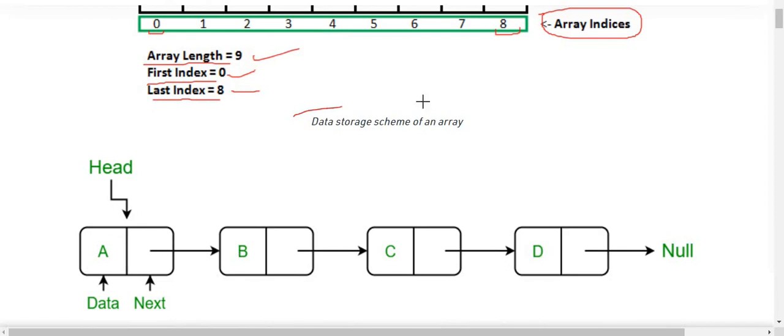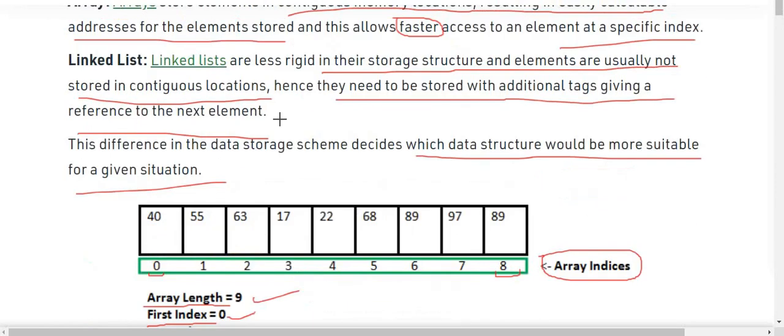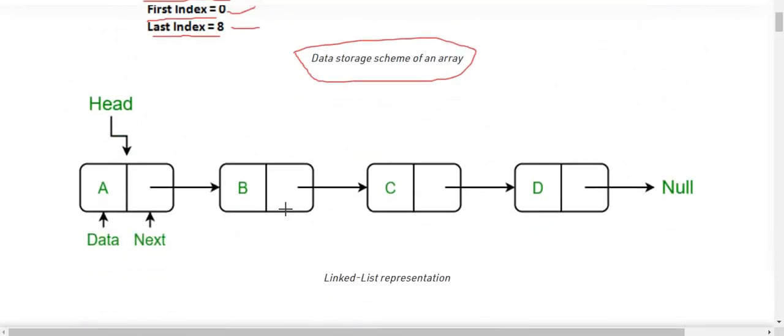We have seen the data scheme of array, now we will see the linked list representation. In case of linked list we have nodes. Nodes consist of two elements: first one is the value and second one is the address of the next element or next node.